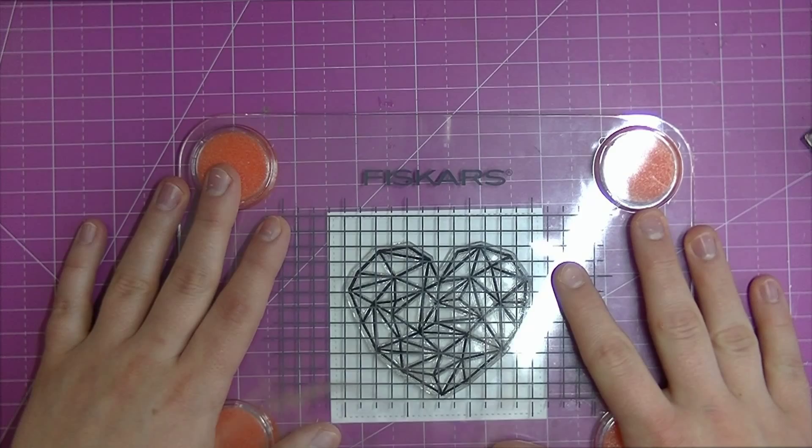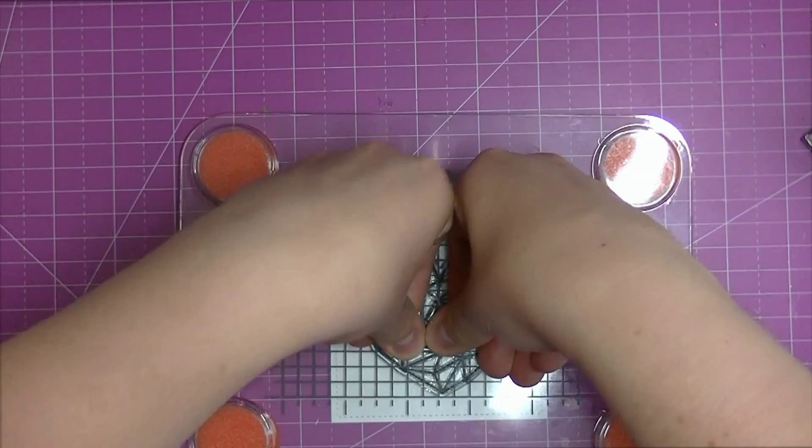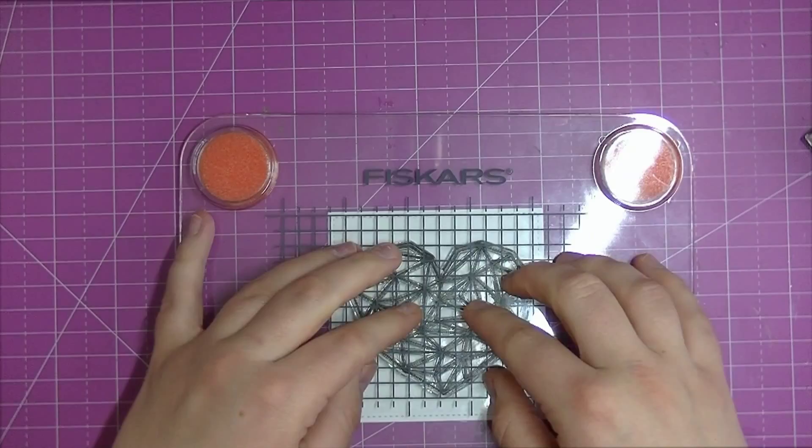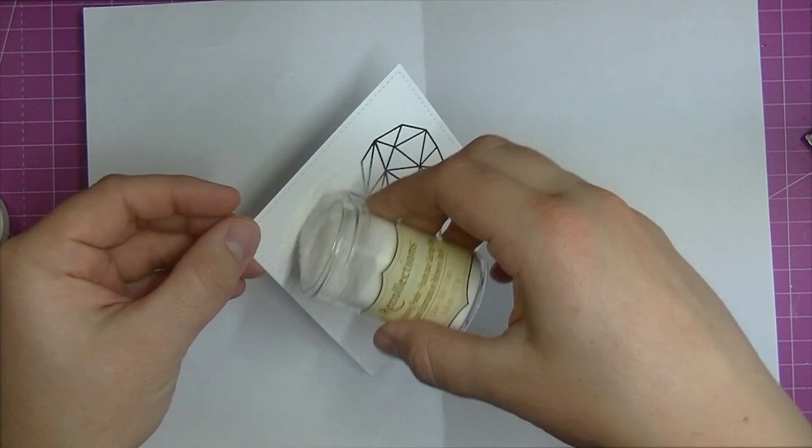Now you could do it with VersaMark ink, but I find to get a crisp embossed black it's better to use the VersaFine and then sprinkle clear embossing powder over top.